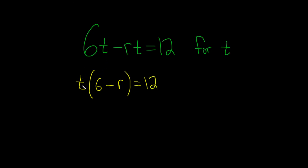Alright, so t is being multiplied by all of this stuff. We want to get the t by itself. So in order to get rid of all of this stuff, since it's being multiplied by all of it, we just divide by all of it. So you put a 6 minus r here and then you also put one here because what you do to one side you do to the other.